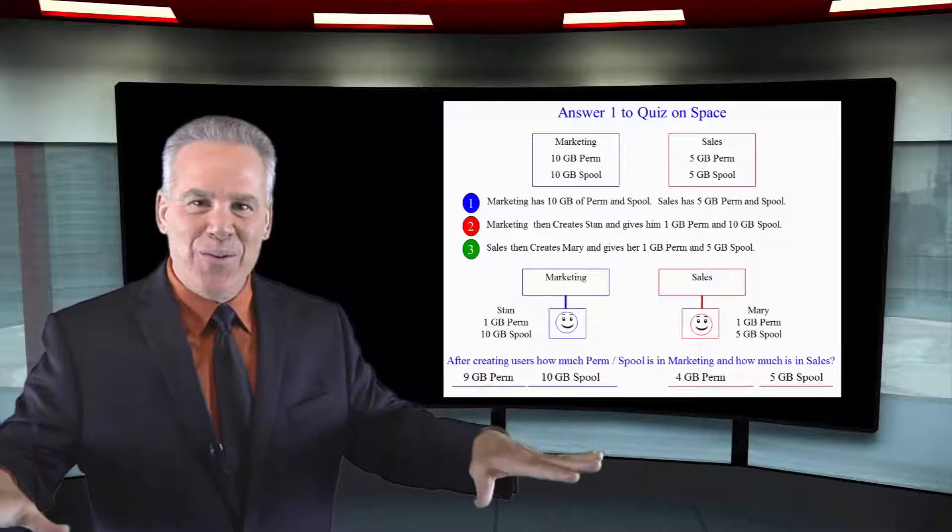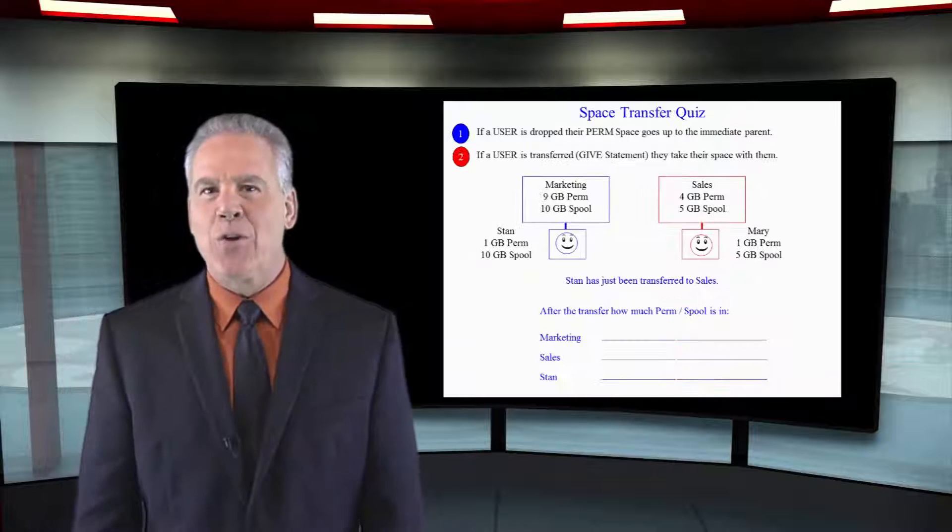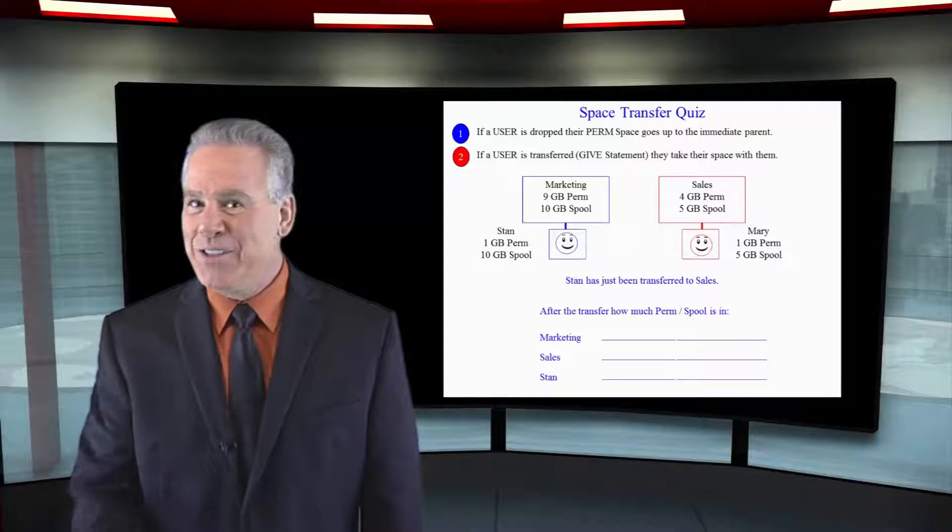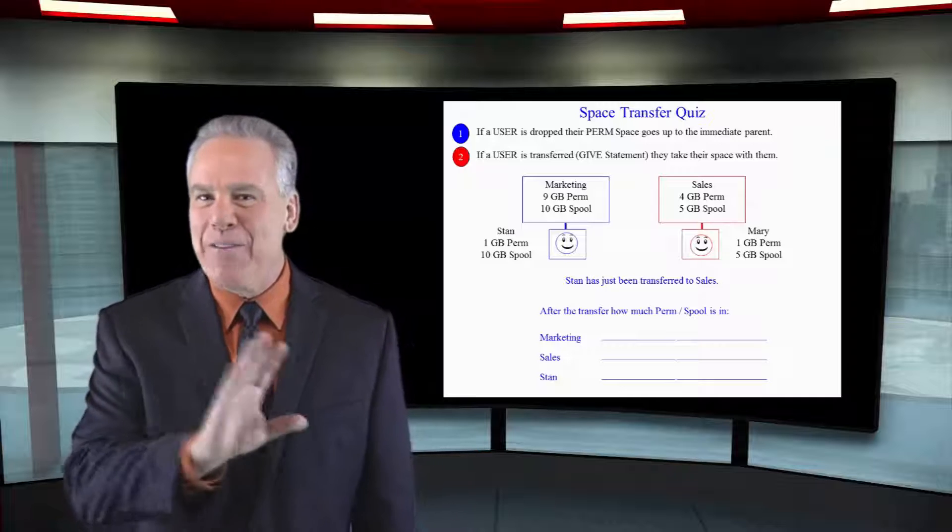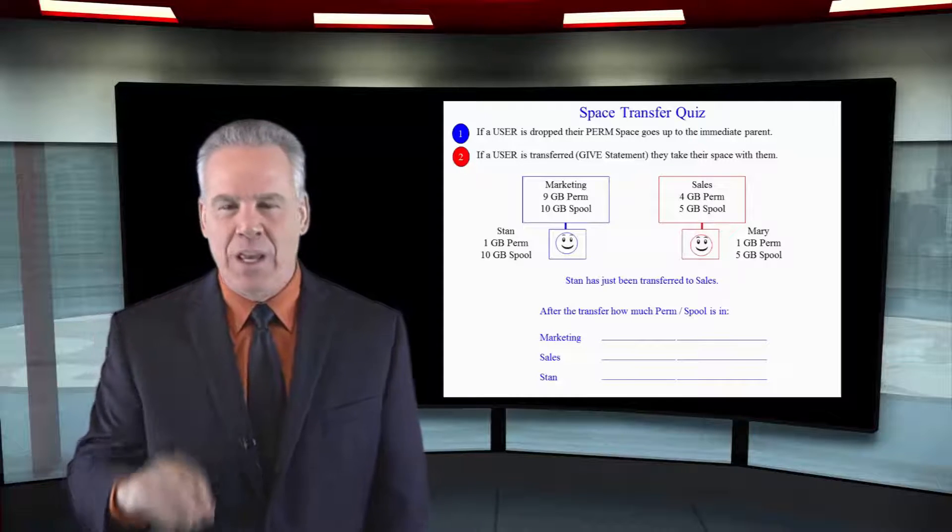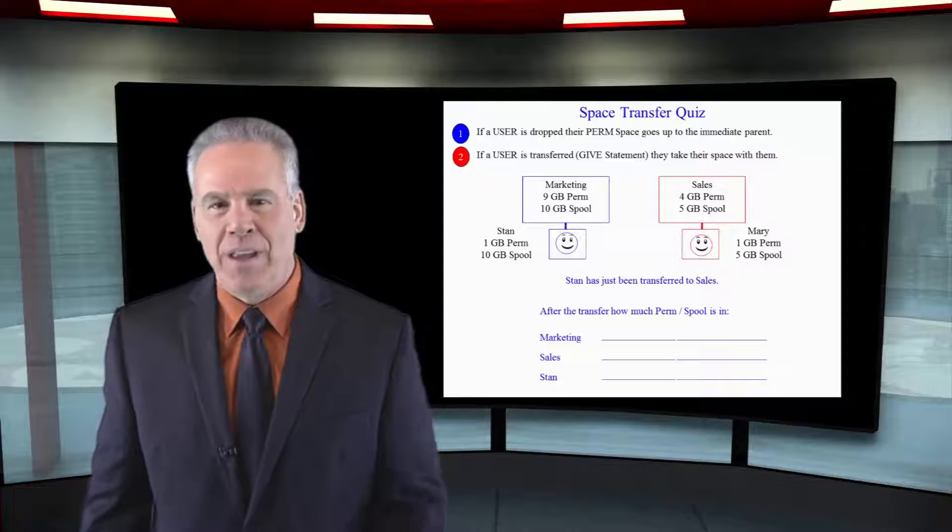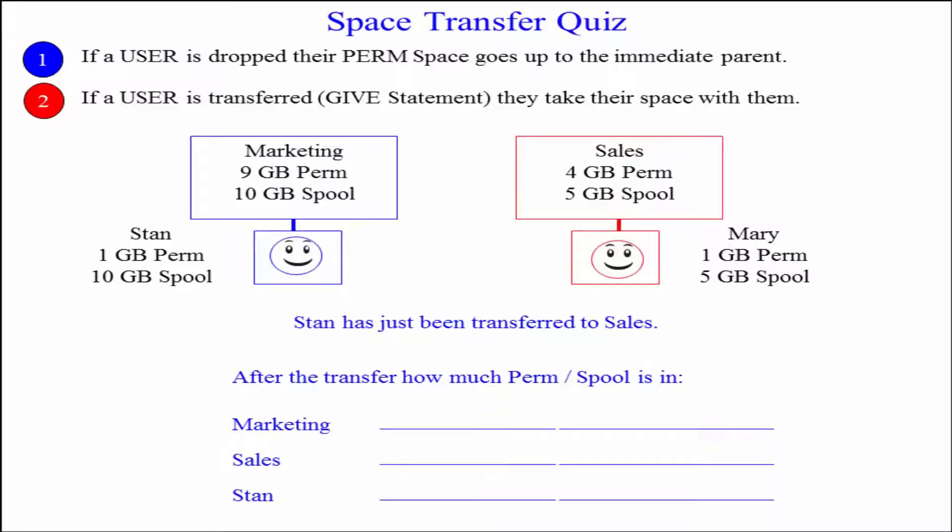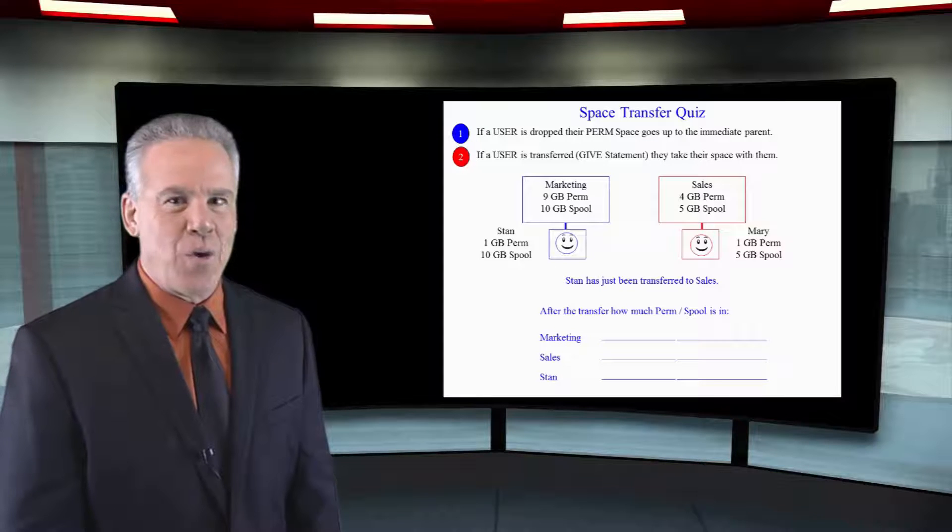Here are those two rules that you're going to mess up. Have a cold heart. Follow these exactly and you're not going to have any problem. Here's rule number one: if the user is dropped, their space goes to their immediate parent, their parent at the time. If a user is transferred with the give statement, they take their space with them.